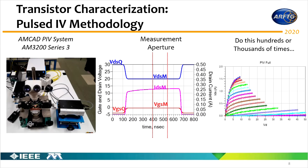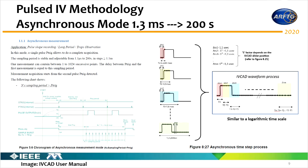This data can then be used for model development. In this talk, I'll go over what we did with these long pulses. We ended up using what's called asynchronous mode. Instead of the previous restriction that you could only pulse for 1.3 milliseconds, now we can pulse up to 200 seconds. The new restriction is that we now have a semi-log time scale, so we can't have a very fine step if we want. The minimum step size I was able to achieve was 1.1 microseconds.